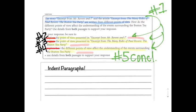Breaking down your extended response question. You can often start with the first sentence in the entire prompt as the first sentence of your introductory paragraph. We highlight this in blue or we underline it. Then we draw our green arrows down to our bullet points because we know we have to get our bullet points in our introductory paragraph.